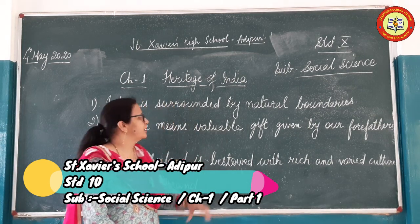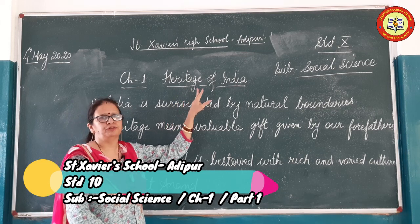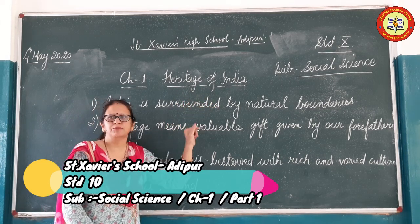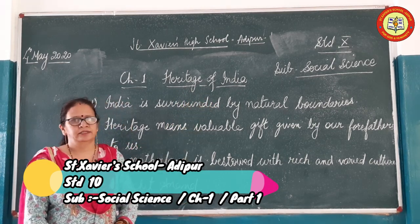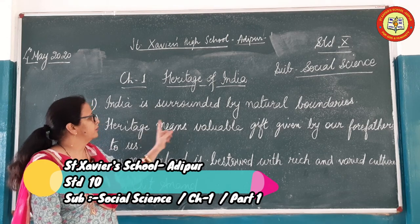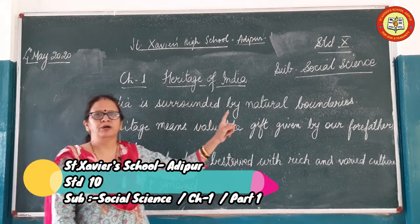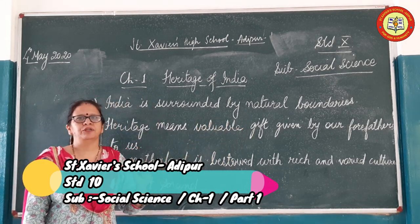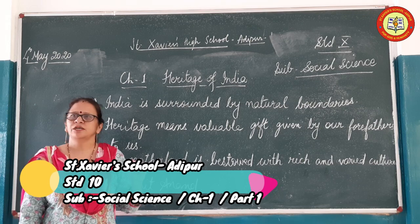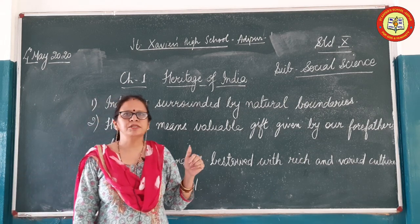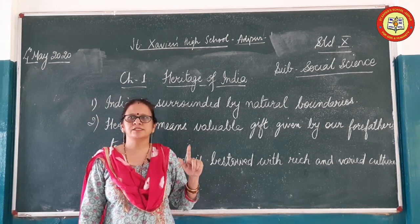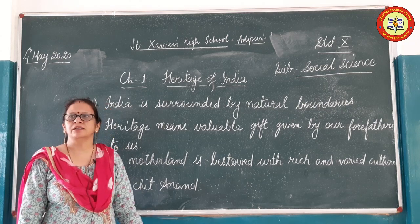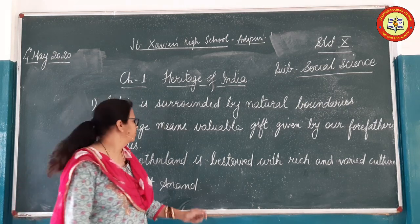The first chapter of history is Heritage of India. You have already done about India in your 9th standard. India is surrounded by natural boundaries. Towards the north we have the Himalayas, towards the west it is the Arabian Sea, east has the Bay of Bengal, and towards the south it is the Indian Ocean.